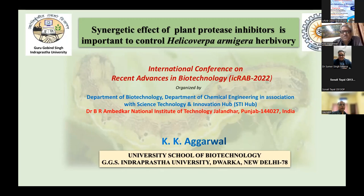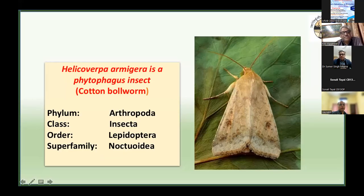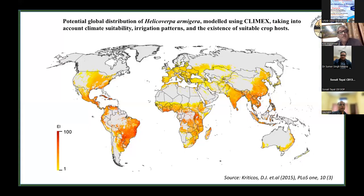The title of my presentation is 'Synergetic Effect of Plant Protease Inhibitors to Control Helicoverpa armigera Herbivory.' In this work we have shown the use of plant protease inhibitors to control Helicoverpa herbivory — how plant protease inhibitors can be exploited as a control strategy for this insect. Helicoverpa is a phytophagous insect that feeds on plants, belonging to Arthropoda, order Lepidoptera, and is popularly known as the cotton bollworm.